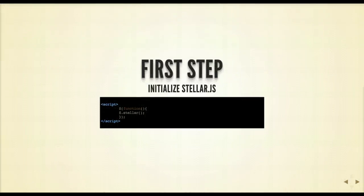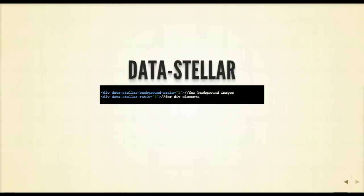The first step is to initialize Stellar.js. Basically, whatever element you run Stellar against, it will search through that element looking for any data-stellar attributes. You can place the data-stellar attribute on any element that is positioned other than static.